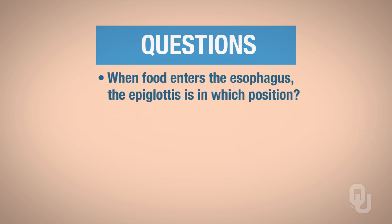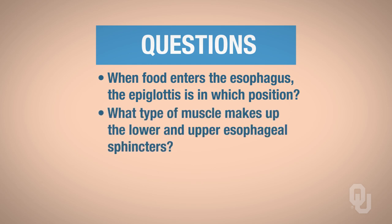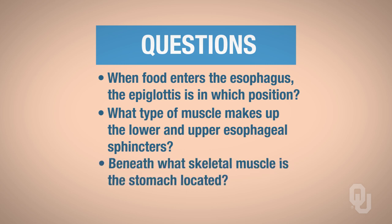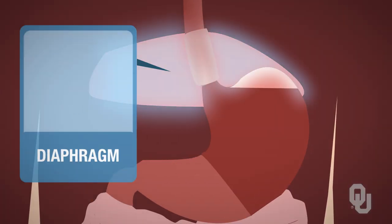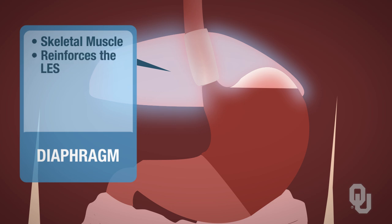When food enters the esophagus, what position is the epiglottis in? And what type of muscle makes up the lower and upper esophageal sphincters? Beneath what skeletal muscle is the stomach located? This skeletal muscle is called the diaphragm, which we'll come back to and discuss later. The diaphragm is reinforcing the lower esophageal sphincter.